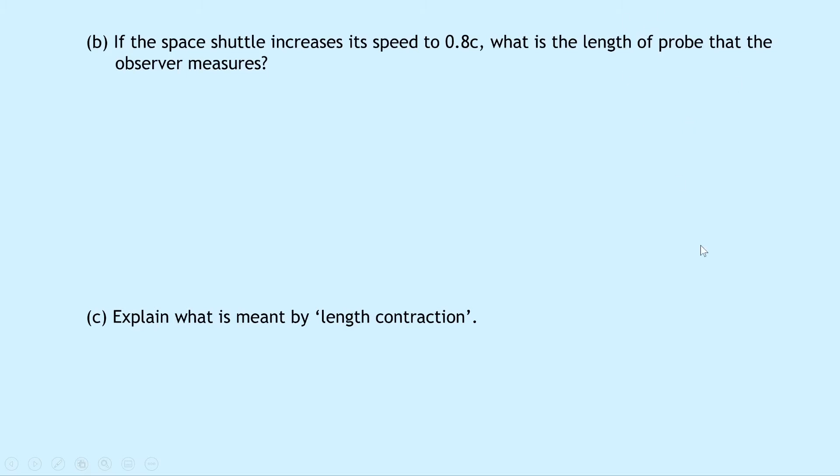So writing down what we know from the question, we're trying to find L dash. We know that L is 45 centimeters and V is 0.8C. So writing down our equation again, we have L dash equals L times the square root of 1 minus V over C squared.